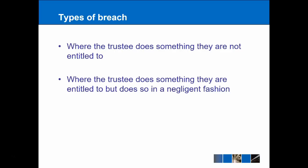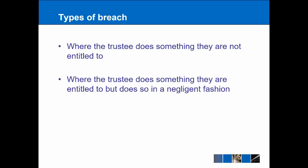There are also a couple of types of breach. The first type is where the trustee does something that they are not entitled to. Within the trust instrument there are rules set out for the trustee — they may invest in certain types of companies but not others. If the trustee does something they're not entitled to, that falls under the first type of breach. On the other hand, if the trustee does something they are entitled to but does so in a negligent fashion, that is the second type of breach.